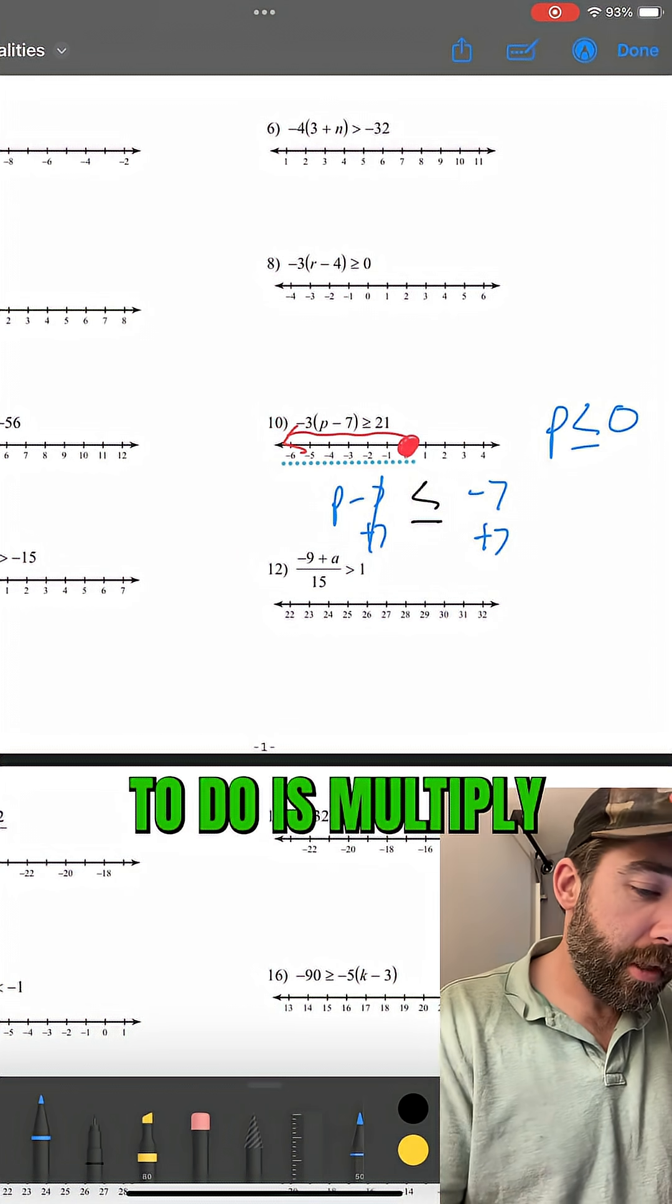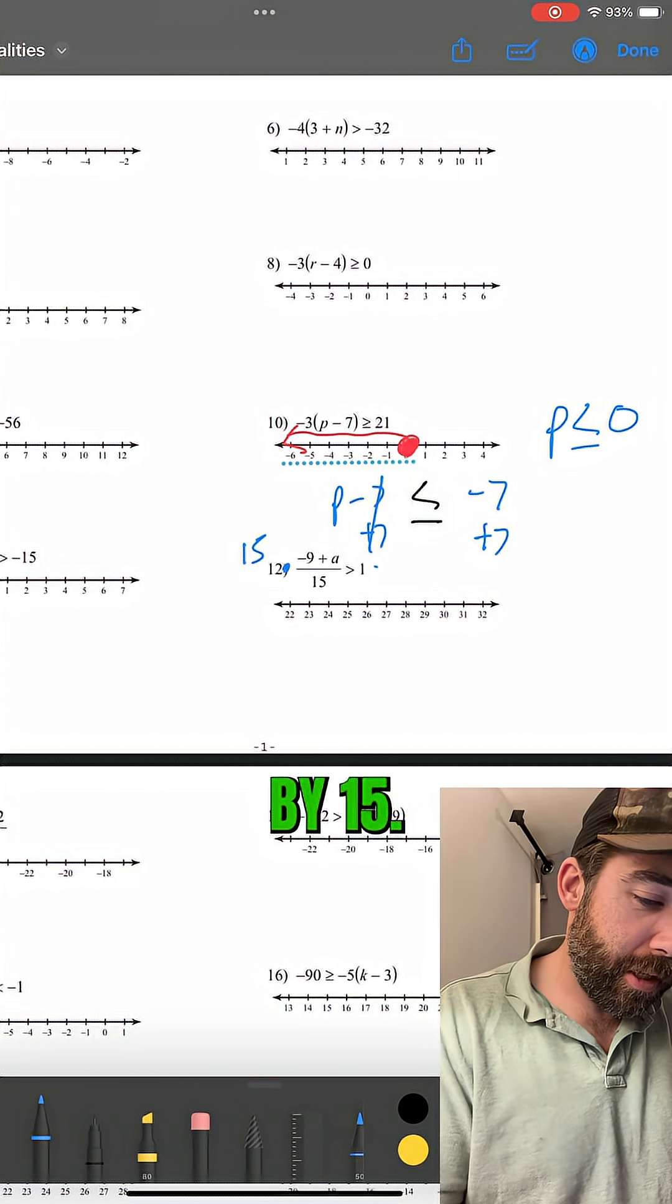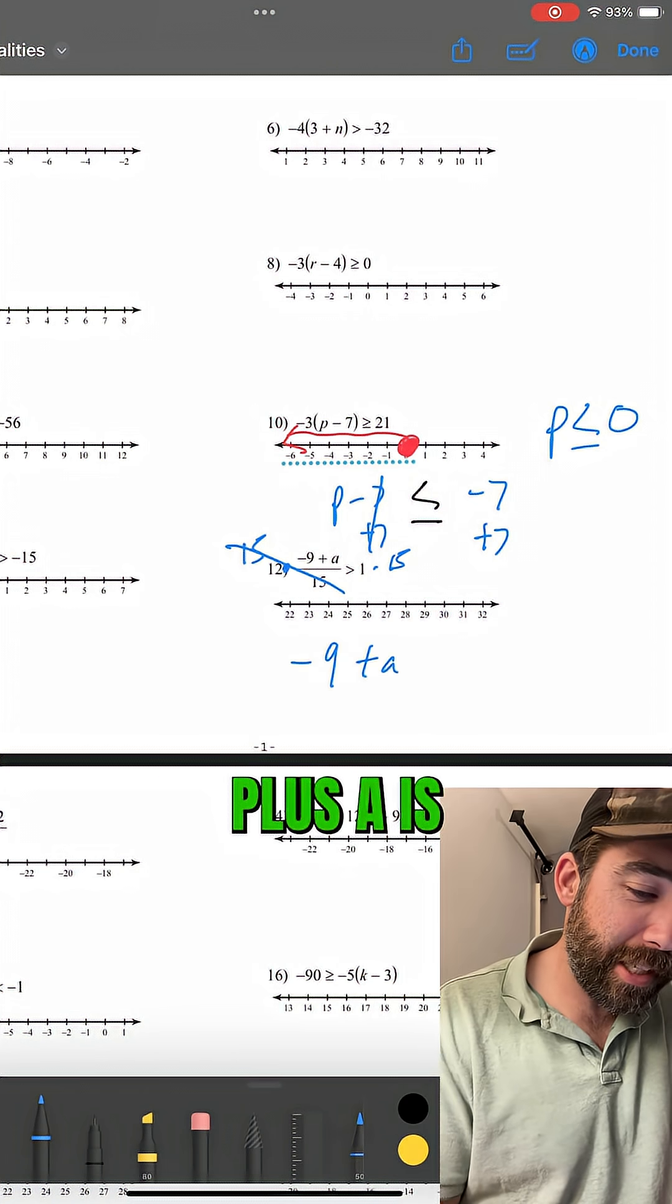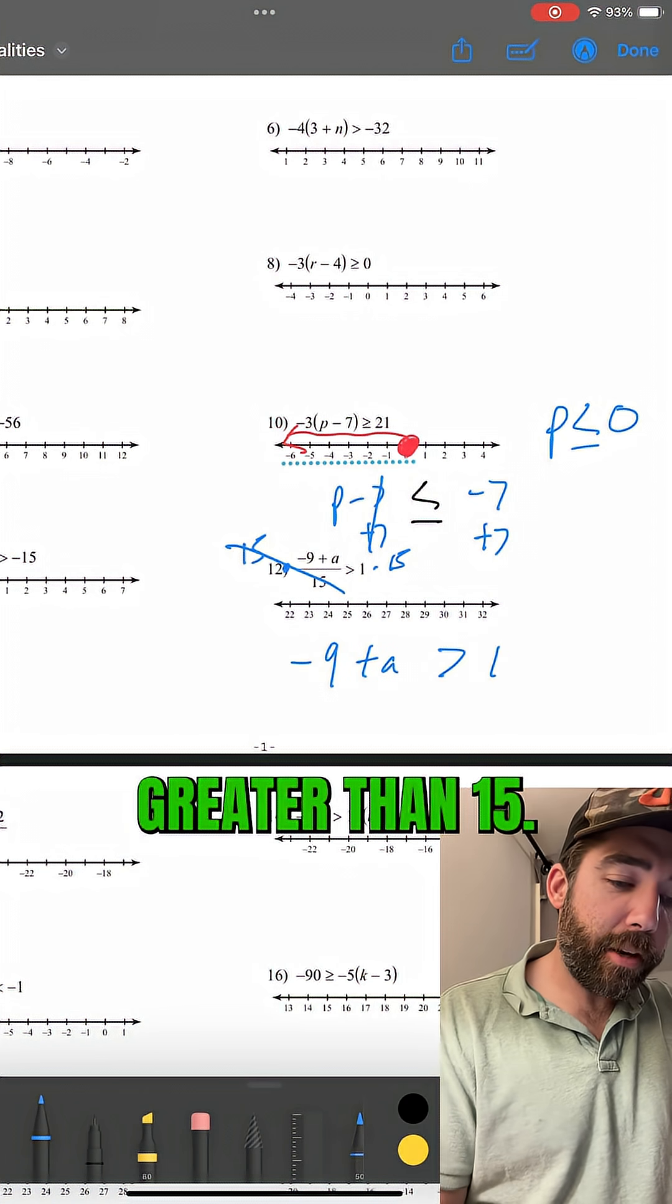So first thing to do is multiply by 15. These guys cancel. Negative 9 plus a is greater than 15.